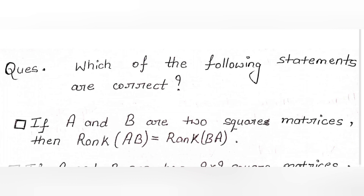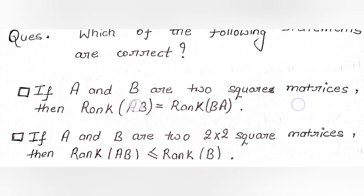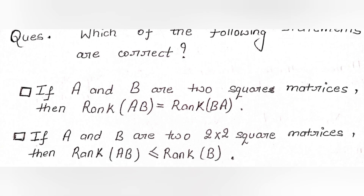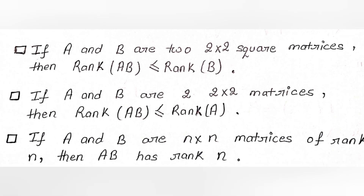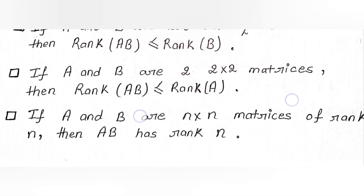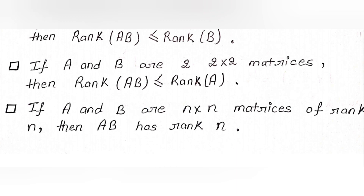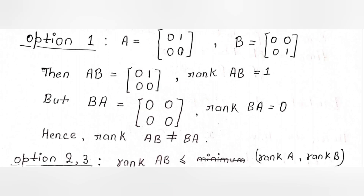Let's start solving the Week 4 graded assignment for Term 2. The question asks which of the following statements are true — we have four options. Option 1: if A and B are two square matrices, then rank(AB) = rank(BA). Option 2: rank(AB) ≤ rank(B). Option 3: if A and B are two 2×2 square matrices, then rank(AB) ≤ rank(A). Option 4: if A and B are two n×n matrices of rank n, then AB has rank n.